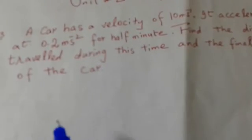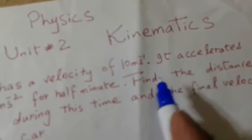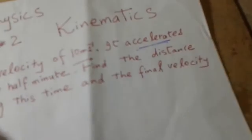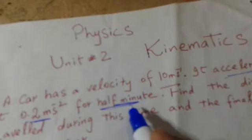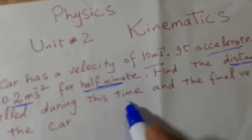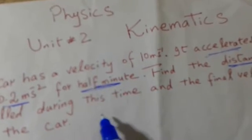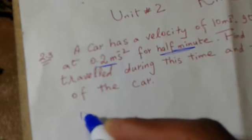In this case we have the velocity of a car at 10 meters per second, and it accelerates at 0.2 meters per second squared for half a minute. This time is given as 30 seconds — since half a minute equals 30 seconds. We have to find the distance traveled during this 30-second interval and the final velocity of the car. First of all, we will write the given data.